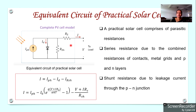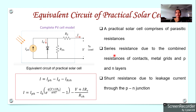In the equivalent circuit of a practical solar cell, we have both series resistance and shunt resistance. The metallic contacts on the P and N layers, including the metal grids, as well as the resistances of the P and N layers themselves, are all combined and represented as a series resistance RS in the equivalent circuit.